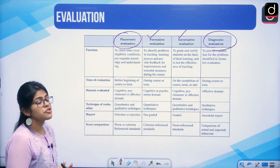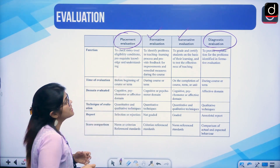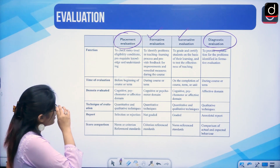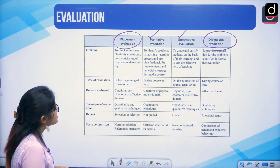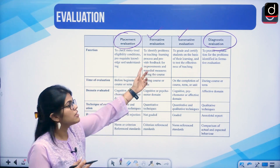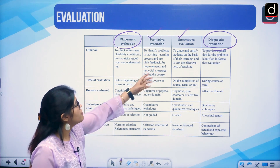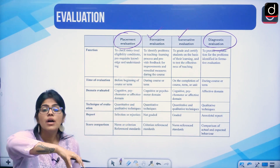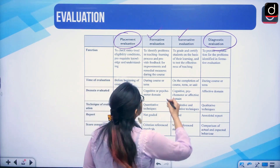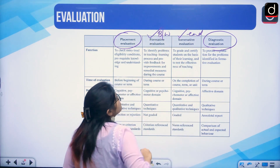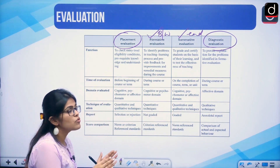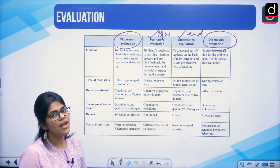Let us distinguish between the types on the basis of function. Placement evaluation checks entry-level eligibility and prerequisite knowledge. Diagnostic evaluation identifies problems in the teaching-learning process and provides feedback for improvement so remedial measures can be taken. Formative evaluation helps the teacher and student improve during the course. Summative evaluation is done at the end to grade and certify students on the basis of their learning.